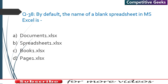Question 38: By default, the name of a blank spreadsheet in MS Excel is Book1.xlsx. The file extension for MS Excel is .xlsx. For reference: MS Word uses .doc, PowerPoint uses .pptx, RTF is used by Notepad, and those are the main file extensions.